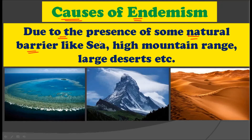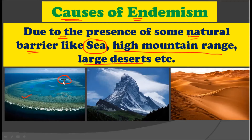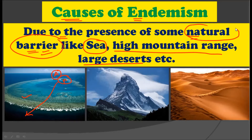Natural barriers include seas, high mountain ranges, and large deserts. In the photograph you can see a sea with a particular island present. Any species present on this island will have specific environmental conditions suitable for its growth. If that species wants to migrate from the island to other terrestrial areas, it has to cross the sea, but this is not possible due to the large area of the sea. So the sea acts as a natural barrier to confine these species to the island only, and that is why species A becomes an endemic species.